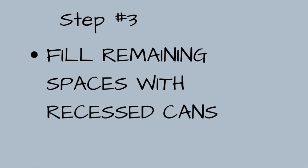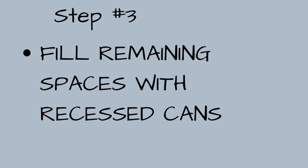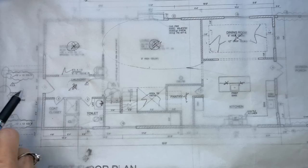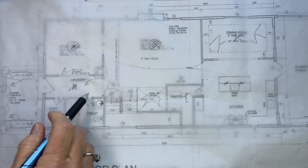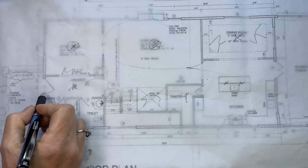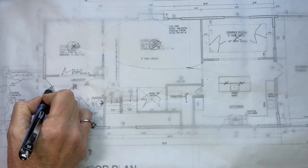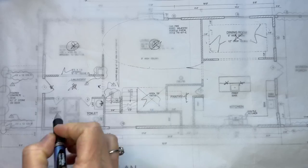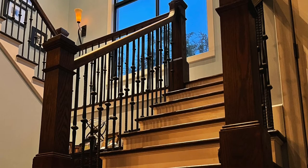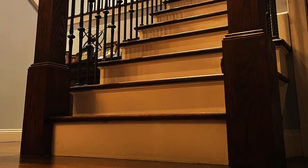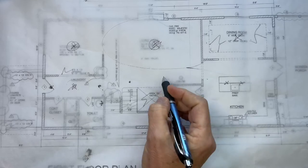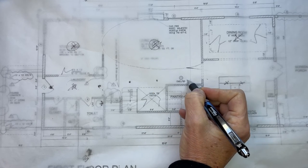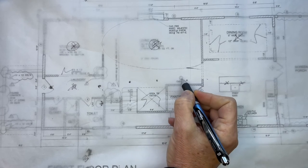Now that all the fixtures are laid out, we'll put the recessed lights in. Going back through the entry hall: I want to light by the door, light the bottom of the stairs — this is a path — so I'll do one more here and here.